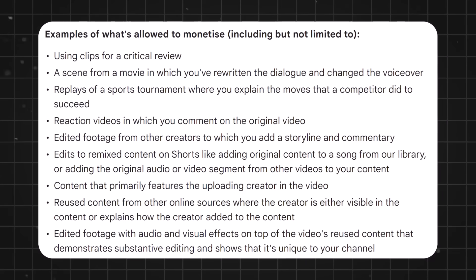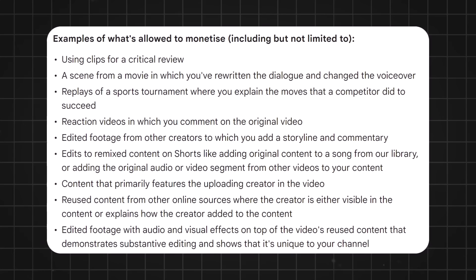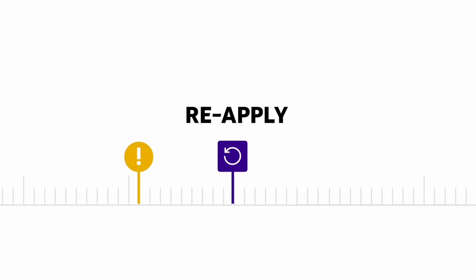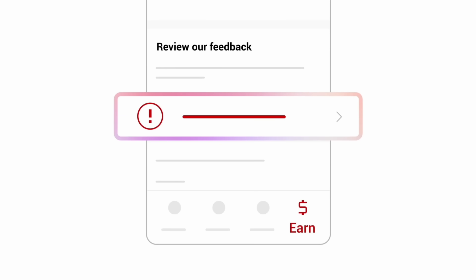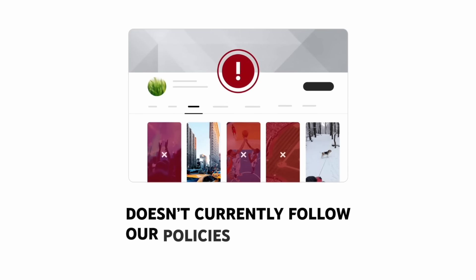YouTube has a long list of recommendations on screen now, so pause the video if you need to. If you decide not to appeal, you can reapply after 30 days, but you'll want to do some channel cleanup in that time — remove videos with a lot of reused content. YouTube doesn't specifically tell you which videos are violating this policy, so you'll have to exercise some common sense. You'll also want to adjust your future content so it doesn't rely so much on reused content. If you're rejected a second time, you'll have to wait 90 days before you can apply again for monetization.